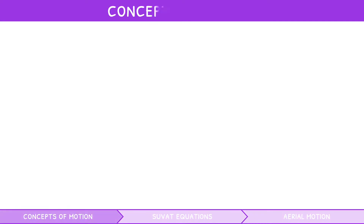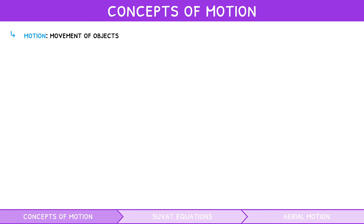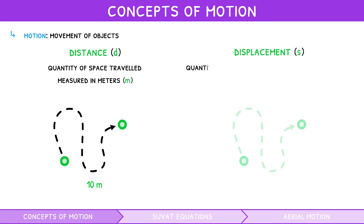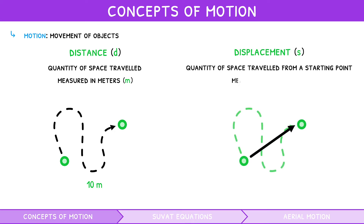One of physics's most fundamental concepts is motion, defined as the movement of objects. An object's movement can be described via several units. Distance, denoted as d, is defined as the quantity of space travelled and is measured in metres. Displacement, denoted as s, is defined as the quantity of space travelled from a starting position and is also measured in metres.